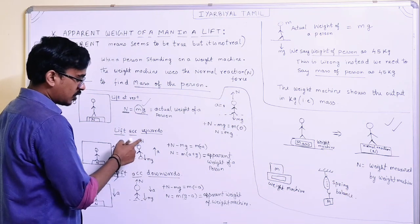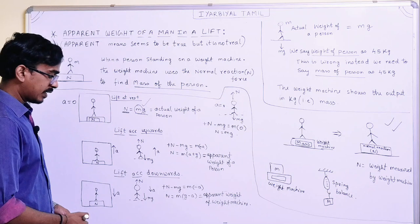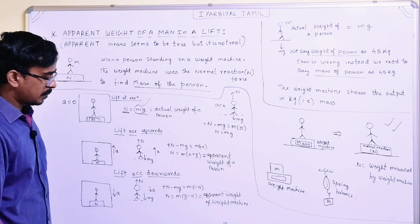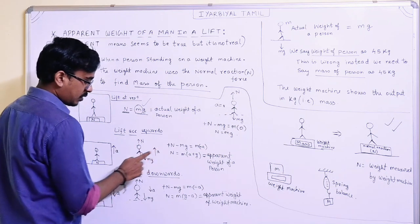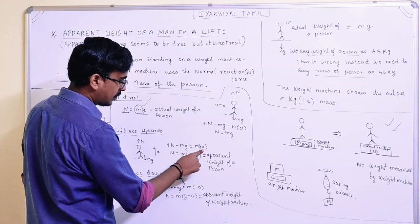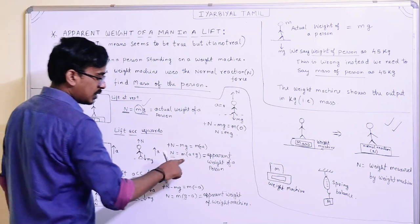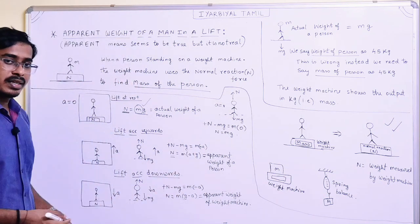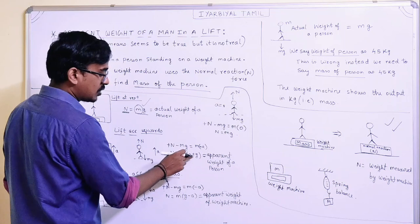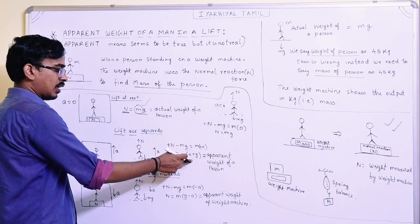This is the case where the lift accelerates upward. The common forces are: upward normal reaction N and downward weight Mg. Since acceleration is upward, applying Newton's equation: N minus Mg equals M into a. So normal reaction N equals Mg plus Ma. The normal reaction increases, and acceleration is positive upward.